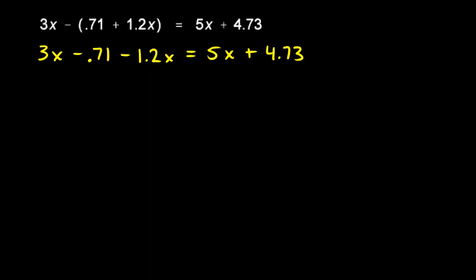What I've done over here is I've basically distributed this negative sign. It applied to the 0.71, making it negative 0.71, and it applied to the 1.2x, making it negative 1.2x.